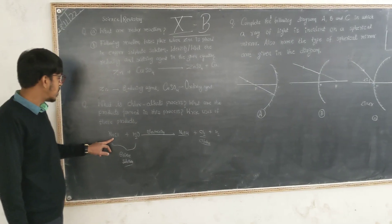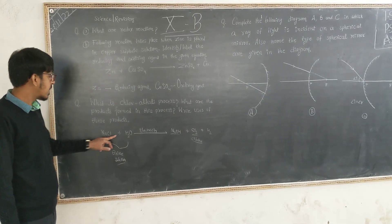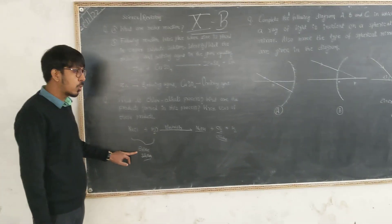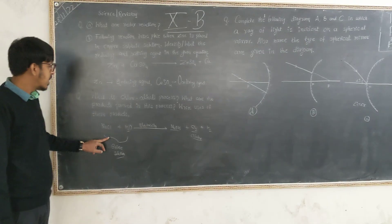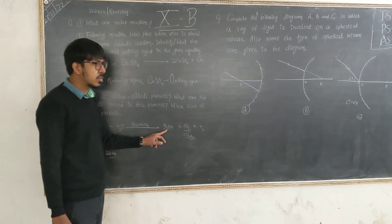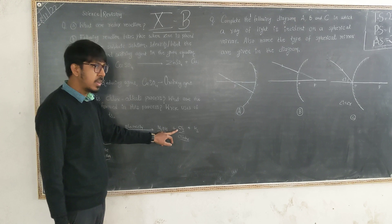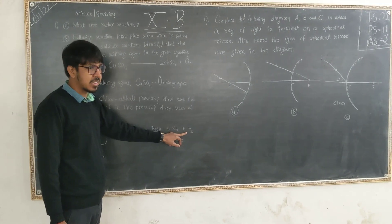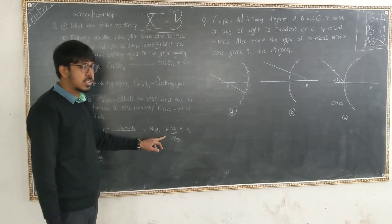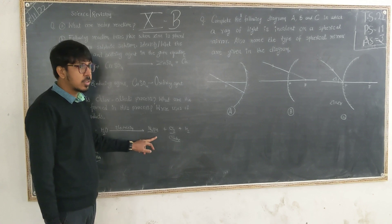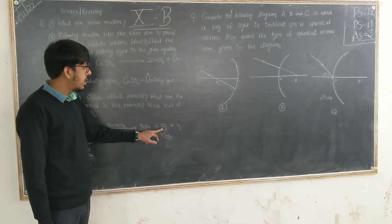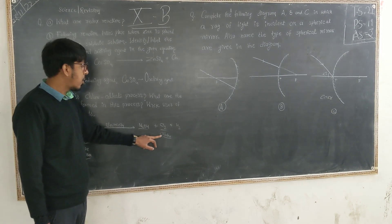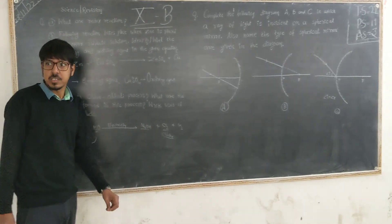So, I have already written this equation. Sodium chloride and water combine to form a solution called brine solution. When electricity is passed through it, it decomposes into sodium hydroxide, which is a powerful base, chlorine gas, and hydrogen gas. Since sodium hydroxide is formed in this reaction, it is called an alkali, and chlorine gas is also liberated. So, it is called the chlor-alkali process.